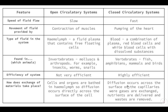A good way to show a comparison is to create a table or Venn diagram. Comparing the two systems: in open circulatory systems, blood flow is slow, whereas in closed systems it is much faster due to the heart's pumping mechanism. Movement of fluid in open systems is provided by muscle contractions, while in closed systems the heart drives circulation. The fluid in open systems is hemolymph — a fluid plasma containing free-floating cells — whereas blood in closed systems combines plasma, red blood cells, and white blood cells with dissolved substances.